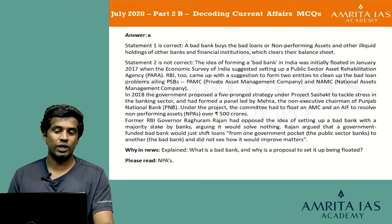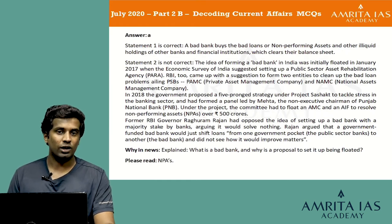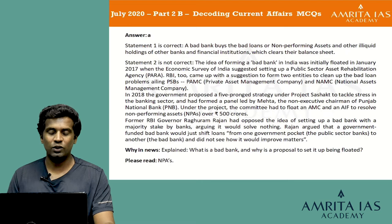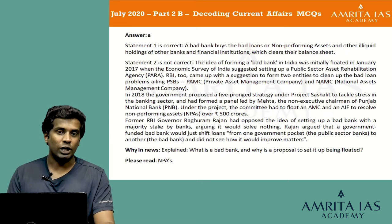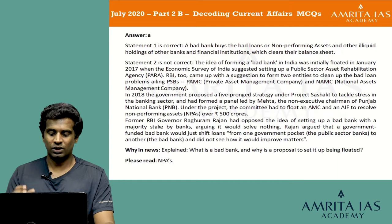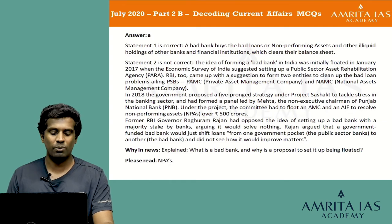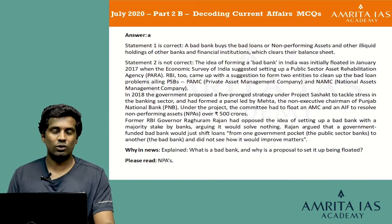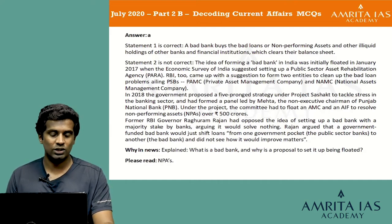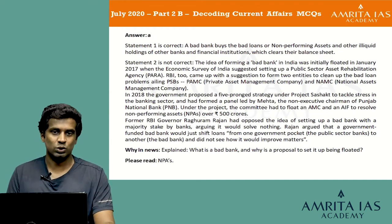Under the project, the committee had to float an AMC and an AIF to resolve NPAs over 500 crores. Former RBI Governor Raghuram Rajan opposed the idea of setting up a bad bank with a majority stake by banks, arguing it would solve nothing. Rajan argued a government-funded bad bank would just shift loans from one government pocket (public sector banks) to another (the bad bank) and did not see how it would improve matters.